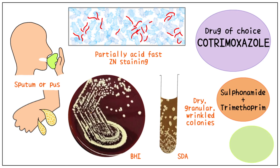The drug of choice used to treat Nocardia infection is cotrimoxazole. Remember, it is a combination of sulfonamide plus trimethoprim, so look for these in the options if cotrimoxazole isn't listed. Usually the medicine is administered for a long duration of at least three months.